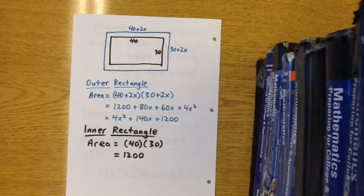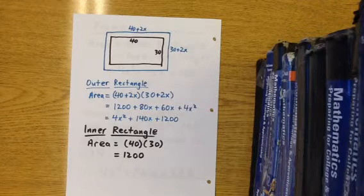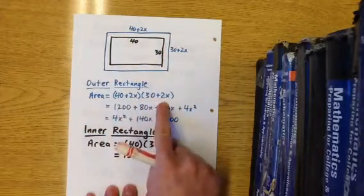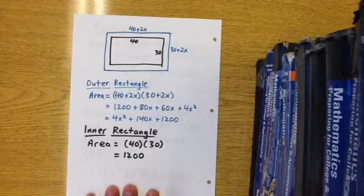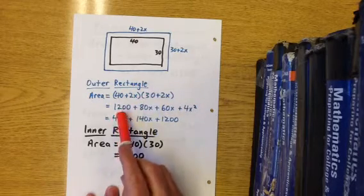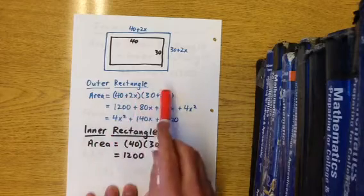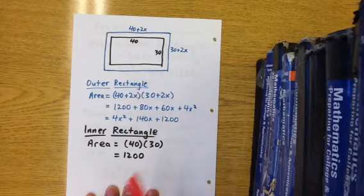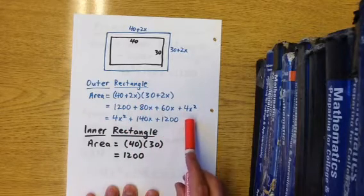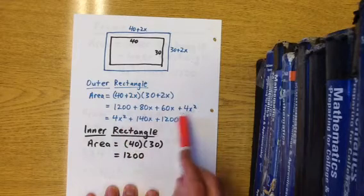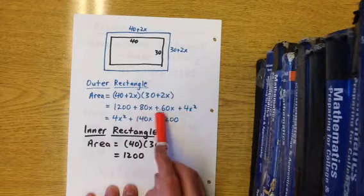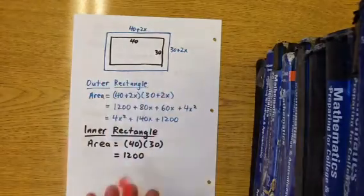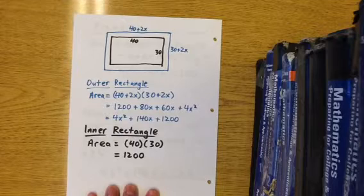What we're going to do now is calculate the area of that outer rectangle. The outer rectangle, the blue one, is 40 plus 2x times 30 plus 2x. Using our powers of distribution, we see 40 times 40 is 1200, 40 times 2x is 80x, 2x times 30 is 60x, 2x times 2x is 4x squared. Collecting our like terms and reordering, that's 4x squared plus 140x plus 1200.